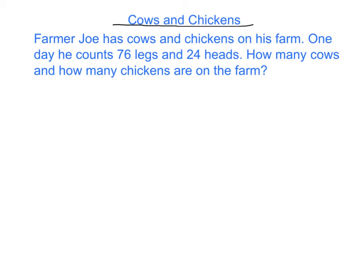So Farmer Joe — first thing, as in most word problems, we have to state what the variables are. Our clue is in the last sentence: 'How many cows and how many chickens are on the farm?' So C equals number of cows. It has to be specific — if we just say C equals cows, it could be the number of legs or the colour of the cow. C in this case is the number of cows.